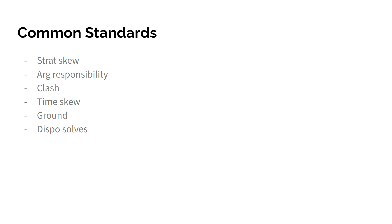The fourth standard is time skews. Basically, the negative being able to quickly kick out of different advocacies in the 2NR — or in the block if you're doing policy — is bad for the affirmative in terms of time. The affirmative spent time in the 1AR or 2AC putting offense on the counterplan or critique, and the 2NR just kicks out of it, erasing all the time they spent making arguments on those positions. This creates a poor time tradeoff for the affirmative, which is bad.